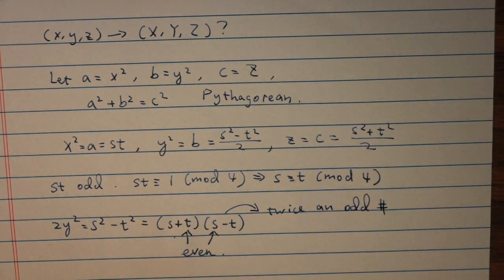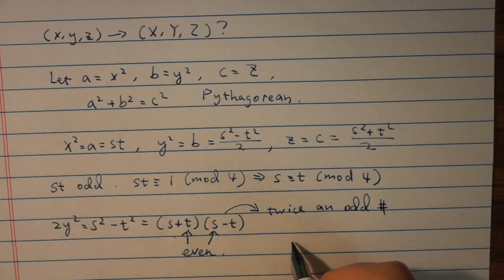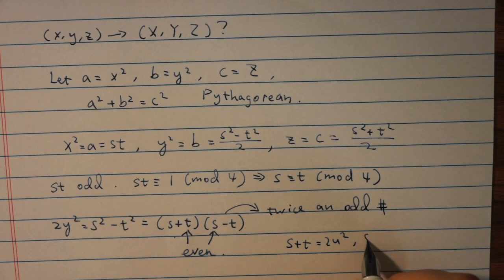So s plus t must be twice an odd number. The only way this could happen is if we have s plus t equals 2u squared and s minus t equals 4v squared for some relatively prime integers u and v.